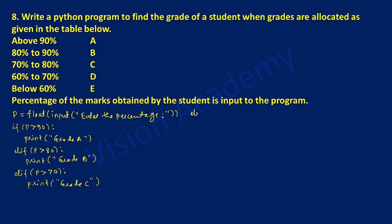Once again I will check the next condition using elif statement. P is greater than 60, colon. If this is true, with indentation I will write print and in double quotation marks I am going to write grade D.